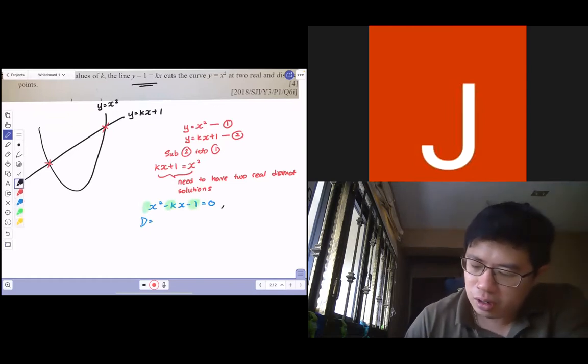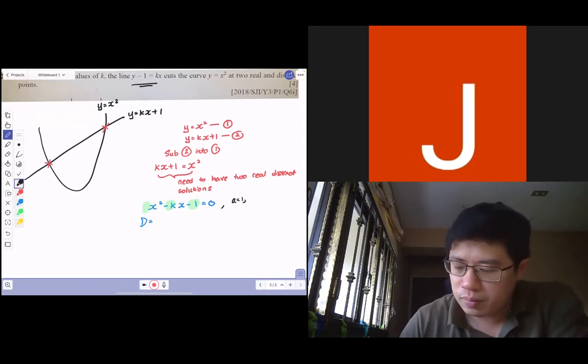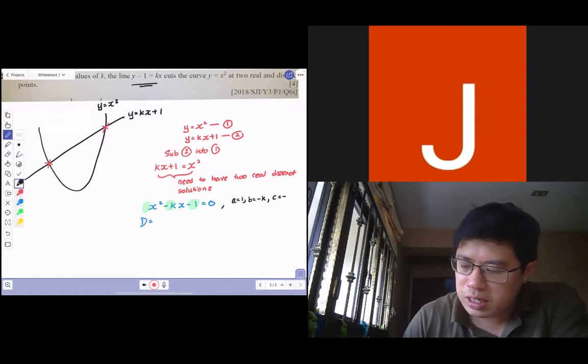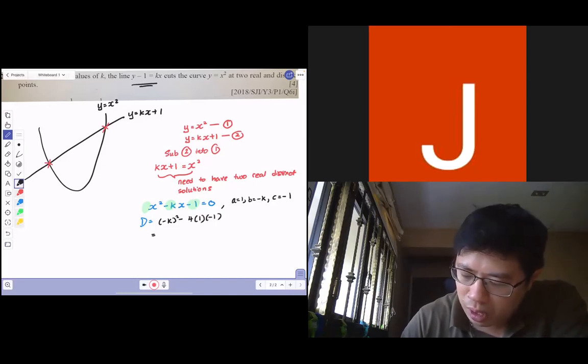a equals one, the coefficient of x squared is one. The coefficient of x is negative k. The constant here is negative one. Forming my discriminant b squared minus 4ac, you get k squared plus four.